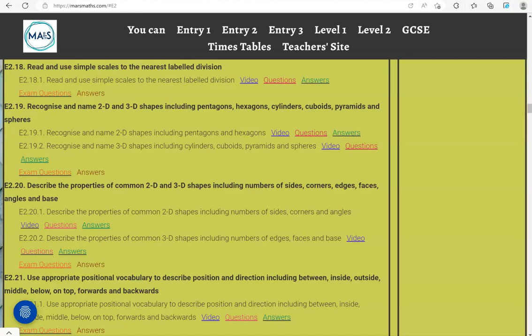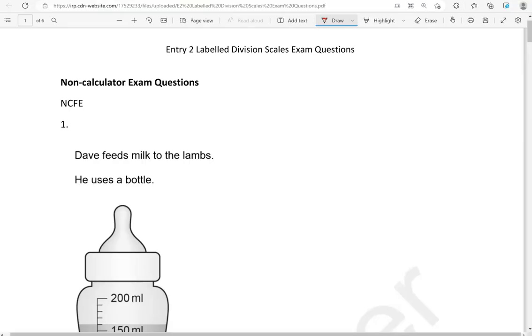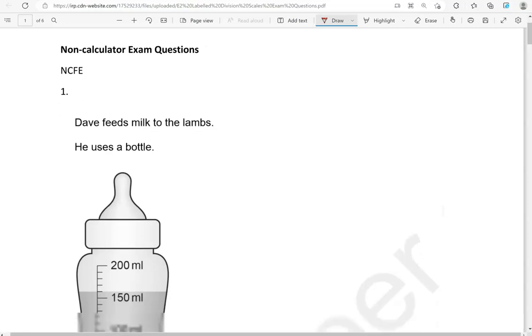In this video we'll go through exam questions that cover the criteria read and use simple scales to the nearest labeled division. You can locate the questions on the massmass.com website under entry 2. The questions come from different exam boards. We'll start with the non-calculated questions and then we'll move to the calculated questions.